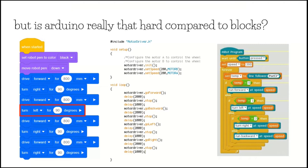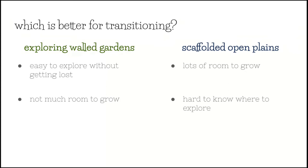But which is better for transitioning? Do we want to start with a walled garden and allow students to explore inside that zone — where it's easy for them to explore, but there's not much room to grow outside of that?